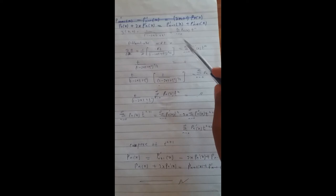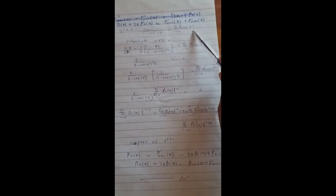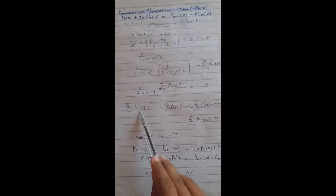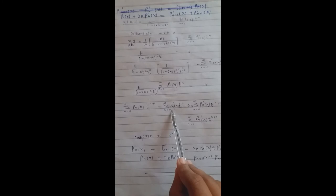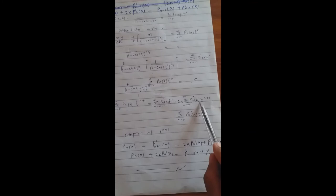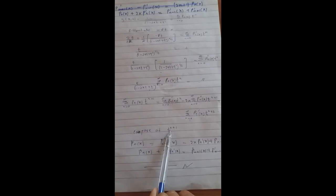This generating function, differentiated with respect to x, gives summation P'n(x)·tⁿ⁺¹ on one side, and on the other side we get summation P'n(x)·tⁿ minus 2x times summation P'n(x)·tⁿ⁺¹ plus summation P'n(x)·tⁿ⁺¹. Now we compare the coefficient of tⁿ.